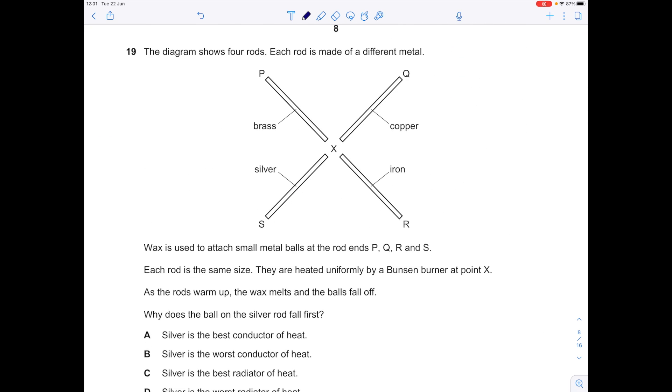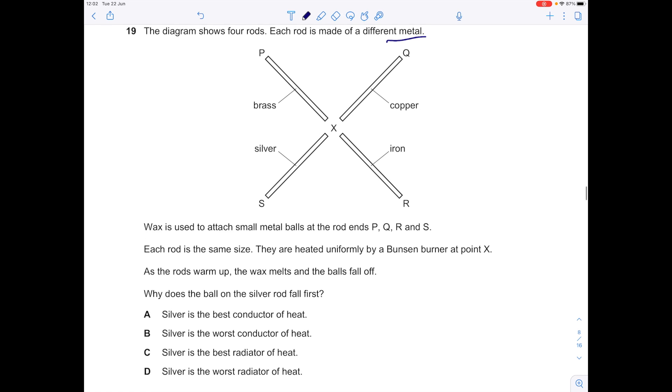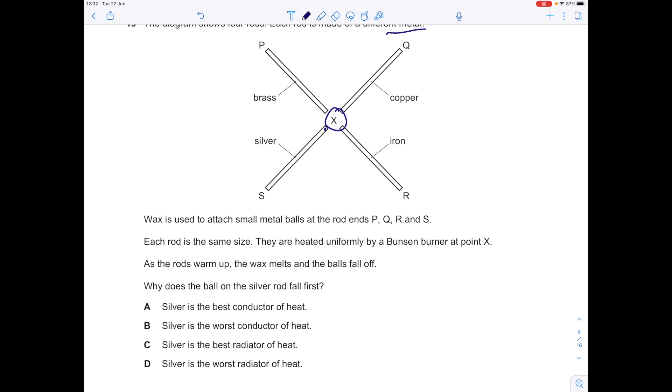The diagram shows four rods. Each rod is made of a different metal. Wax is used to attach small metal balls at the rod ends P, Q, R and S. Each rod is the same size. They're heated uniformly by Bunsen burner at point X. As the rods warm up, the wax melts and the balls fall off. Why does the ball on the silver rod fall first? We know that as this Bunsen burner here heats, it's going to cause those particles to vibrate more, conducting the heat through the metal, causing that ball to fall off first at S. So the answer here must be that silver is the best conductor of heat.